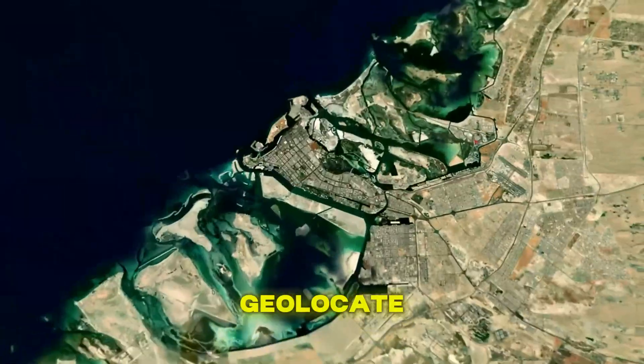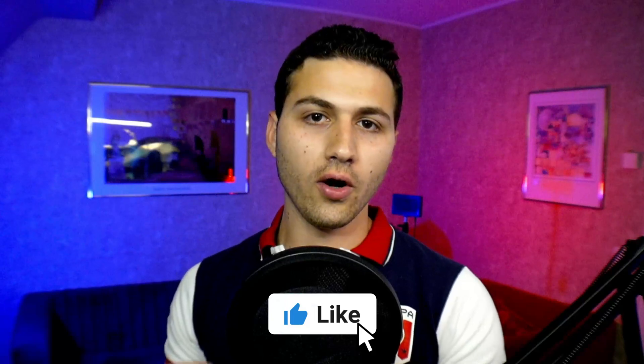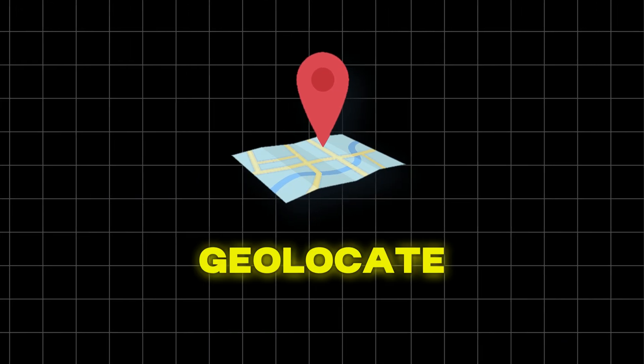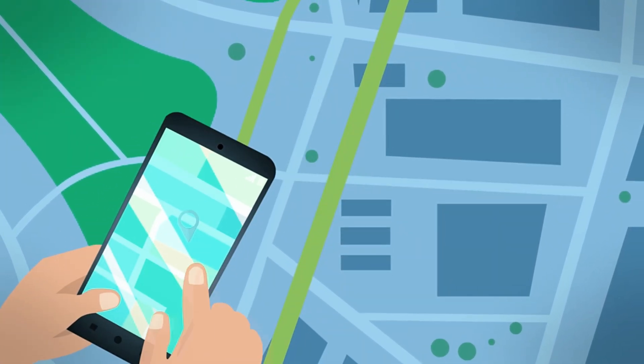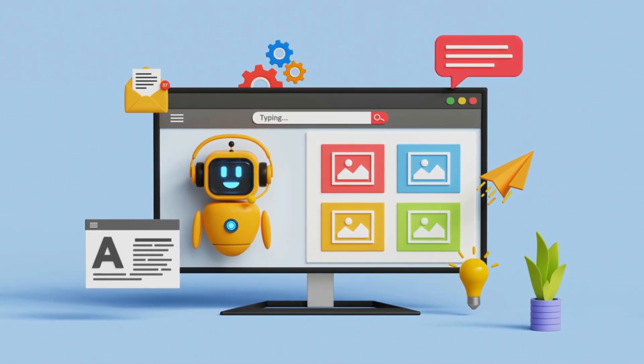In today's video I would like to talk about AI and how you can take advantage of that to geolocate images. My name is Sat from CyberSudo. This is the second video after my YouTube channel got deleted, so make sure to like the video. The tools I'll be talking about are not completely free, but we can still take advantage of them to get more information about a picture.